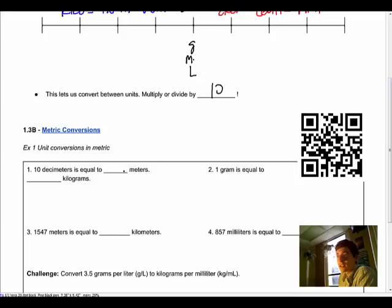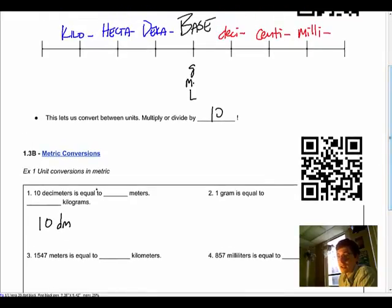Now this line here wrapped and it shouldn't have, so we're just gonna fill some in. So if I have 10 decimeters (lowercase d, lowercase m), we come back up to our number line. The question is how many meters is that. So if I am right here in the deci spot and I have 10, there's an implied decimal right there.